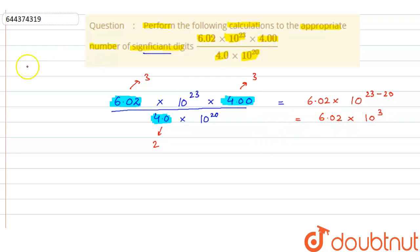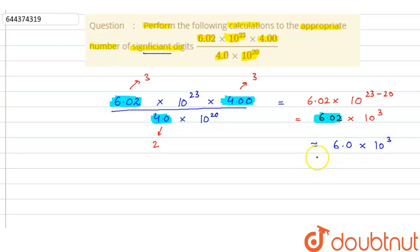Now, in 6.02 we have three significant digits, but we want the answer to two significant digits. So when we round off to two significant digits, it becomes 6.0 × 10³. Here 6 and 0 are the two significant digits, and 10³ is not counted in significant digits. So this is the final answer.